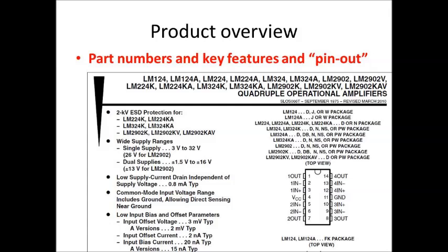Maybe a product overview — the first thing at the top of the sheet is part numbers and key features and a pinout. In other words, what have I bought? On this particular data sheet there's a bunch of different part numbers: an LM124, a 124A, a 224, et cetera. Each of those part numbers is a slightly different type of quadruple operational amplifier — a quad op-amp, meaning that in that chip there are four individual operational amplifier circuits, all in the same package.